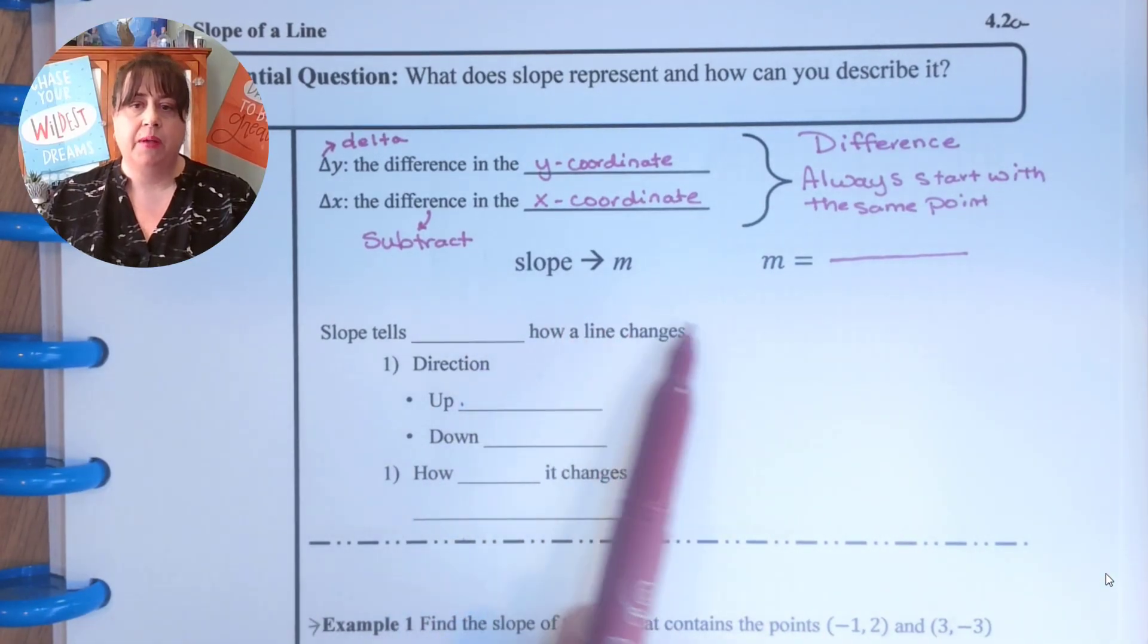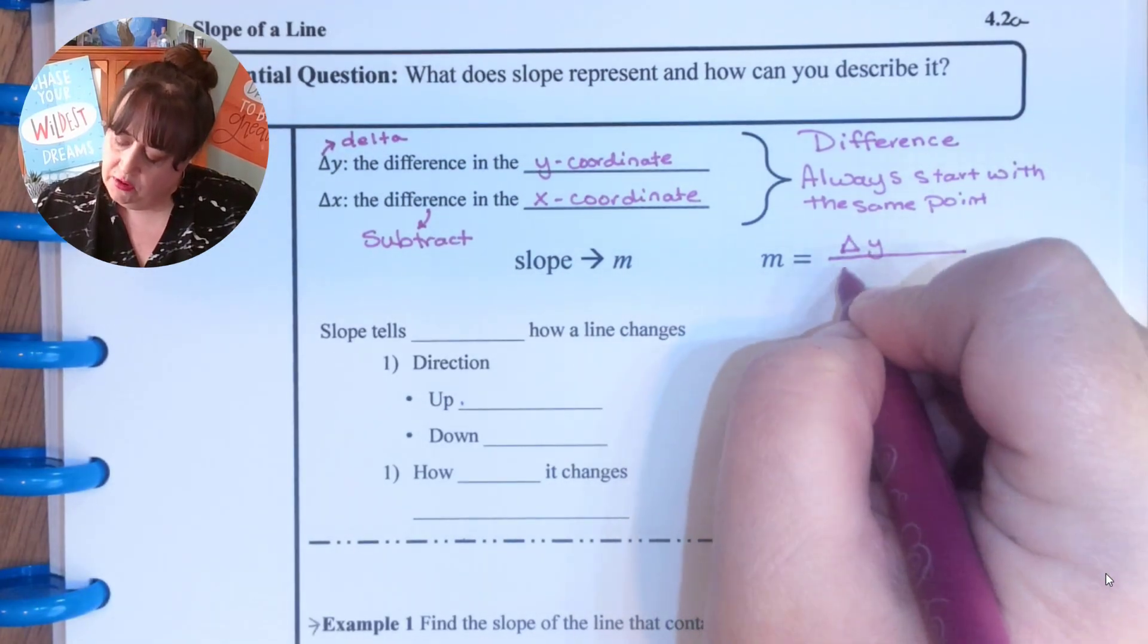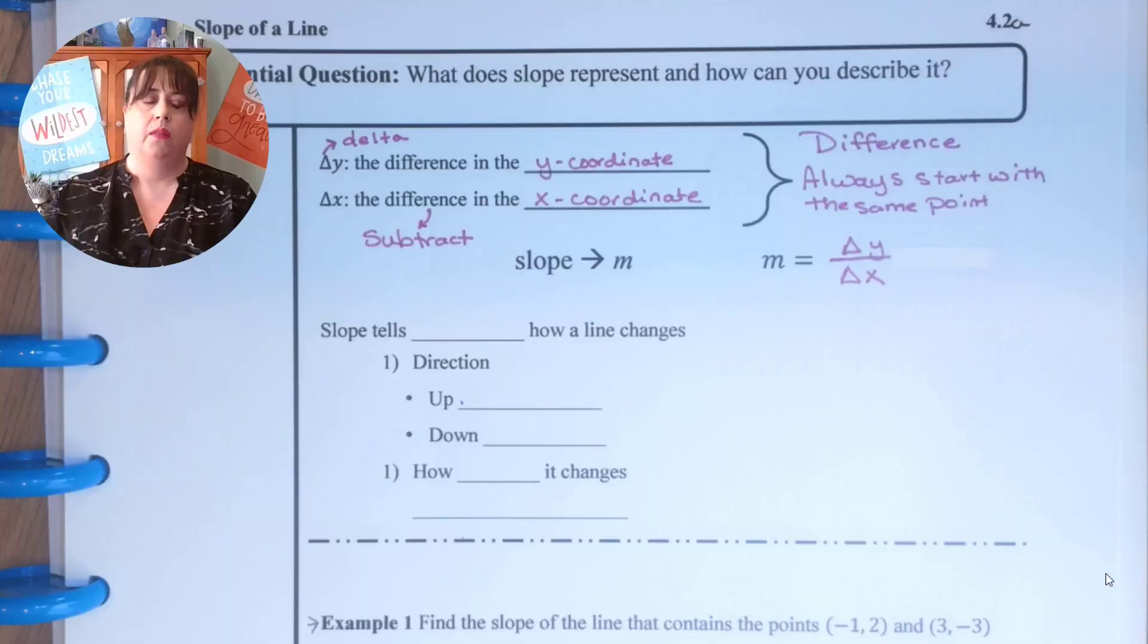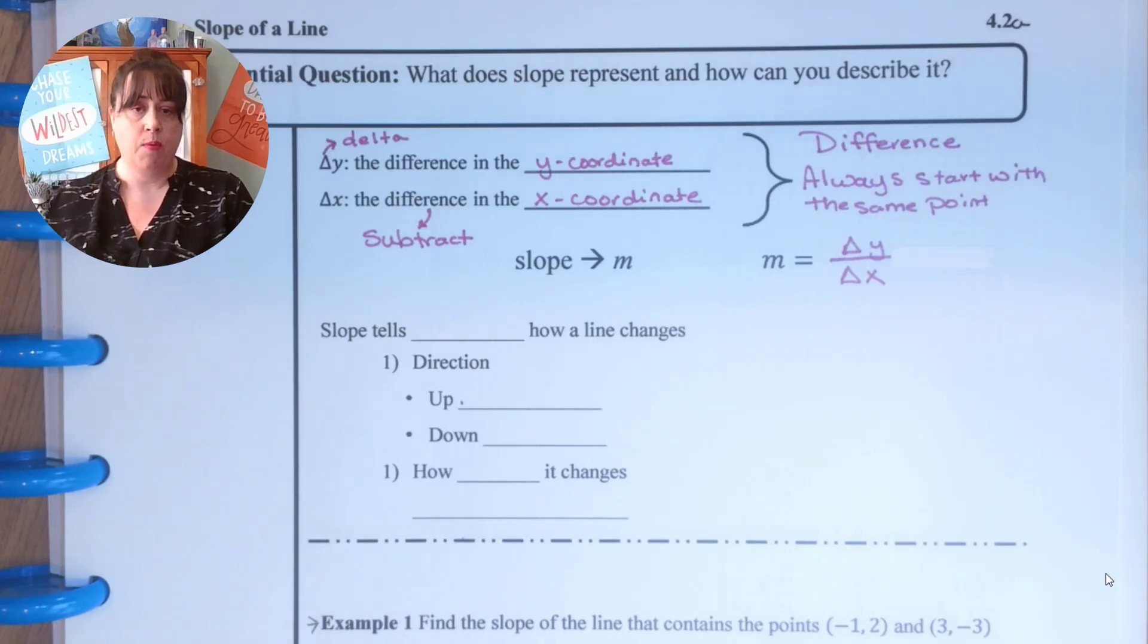Slope we represent with the letter m. So the slope is delta y over delta x. There is another equation that you may see in other textbooks but this is how I represent it always and it's easiest for me because I don't have to worry about these subs and the direction.